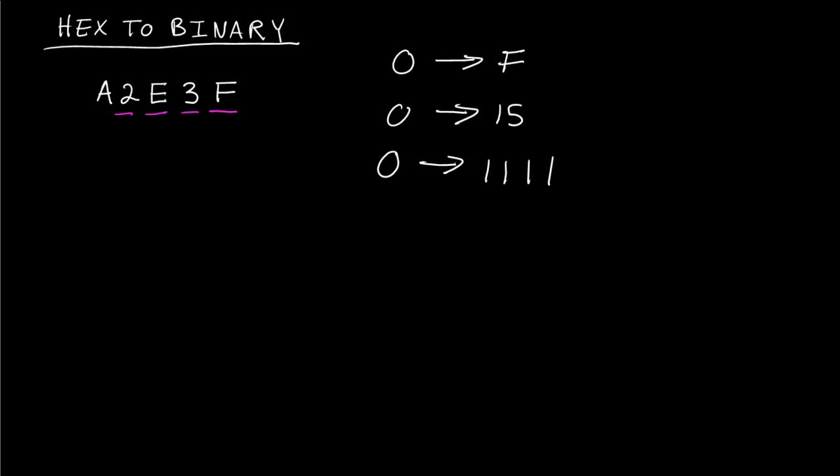Let's start off with F. The letter F is 15, and 15 in binary is 1111. Now let's do 3. Three in binary is 11, but we need four bits, so this is 0011 in binary.